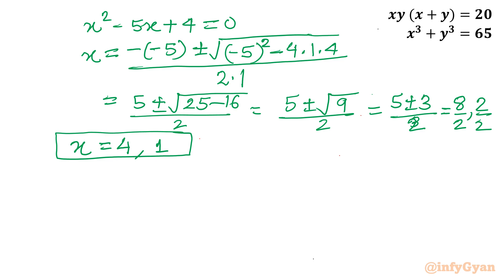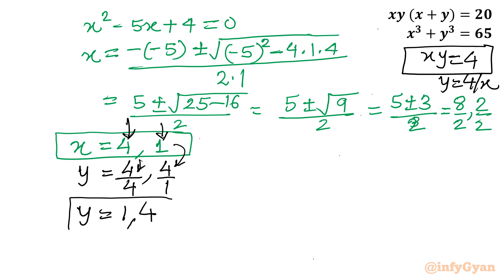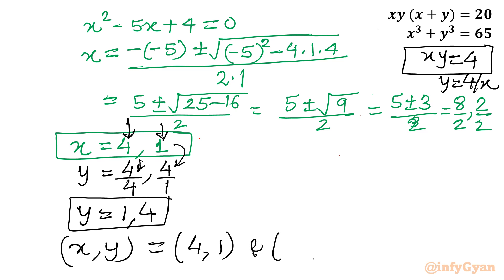We know xy = 4, so y = 4/x. For x = 4, y = 4/4 = 1; for x = 1, y = 4/1 = 4. So our final answer is: (x, y) = (4, 1) or (x, y) = (1, 4).